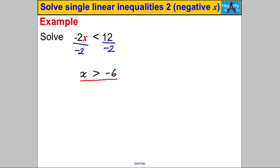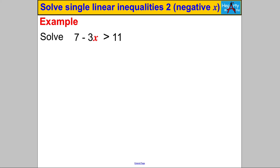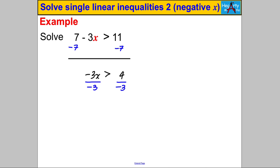Let's try one more — pause the video and have a go yourself. Solve: 7 - 3x > 11. I need x by itself, so subtract 7 from both sides: -3x > 4. I subtracted — that doesn't reverse the inequality sign. Now to undo multiplying by -3, I divide both sides by -3. On the left I get x; on the right, 4 ÷ (-3) = -4/3. Because I divided by a negative, I must swap the inequality sign. The answer is x < -4/3.